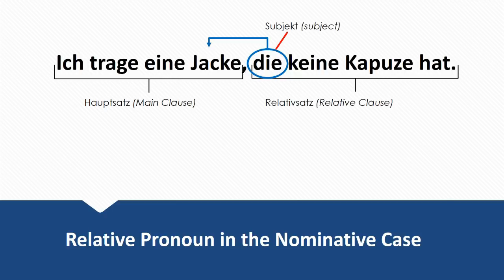Next example: Ich trage eine Jacke, die keine Kapuze hat. I'm wearing a jacket that doesn't have a hood. In this relative clause, we're using 'die' because we're referring back to Jacke, and Jacke is feminine. Die is the subject — the jacket is the active part, that's the subject of that clause.